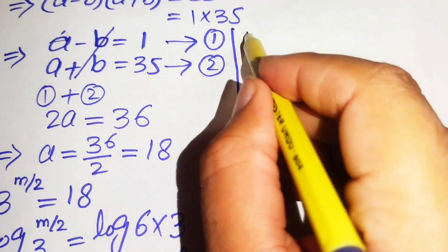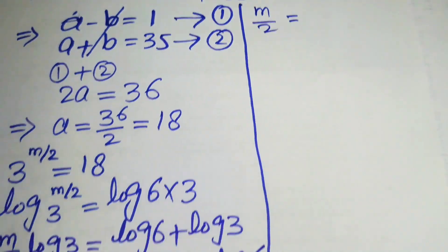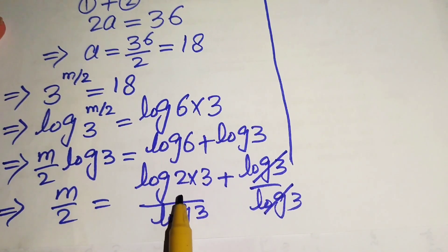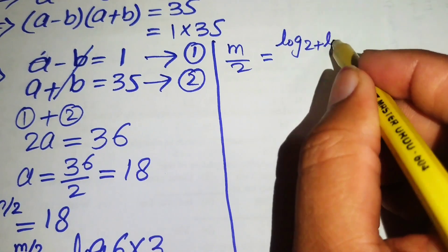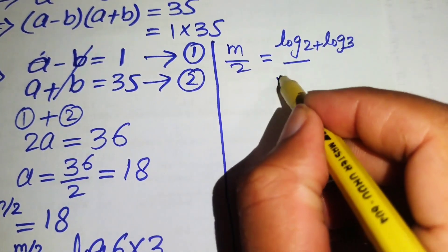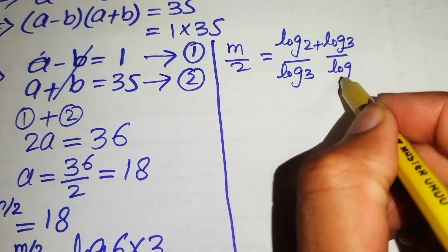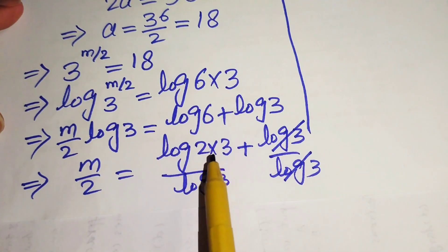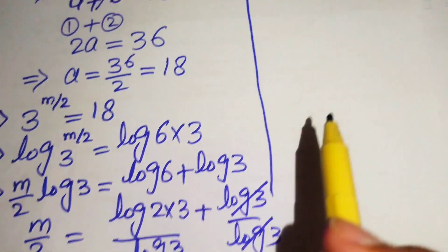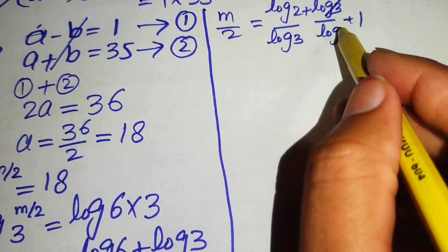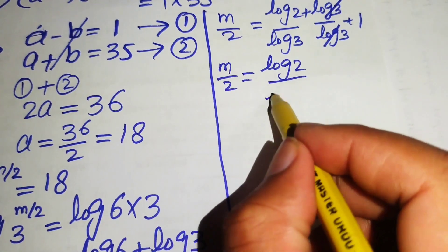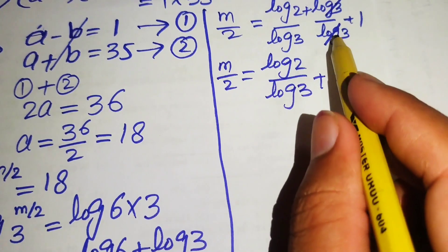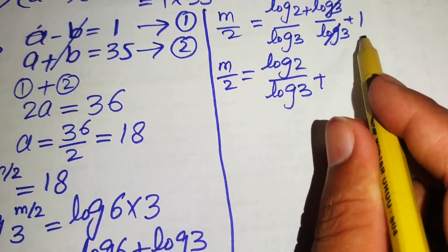Expanding using log properties: m over 2 equals log 2 plus log 3, all divided by log 3. Separating the terms, log 3 over log 3 cancels to 1, leaving m over 2 equals log 2 over log 3 plus 1, and adding the two 1 terms gives log 2 over log 3 plus 2.